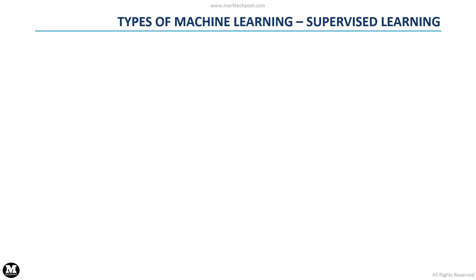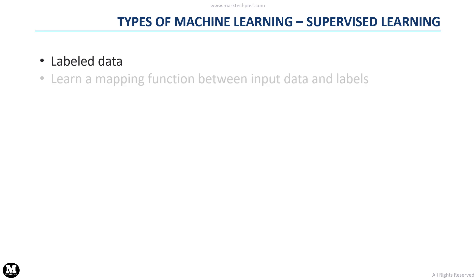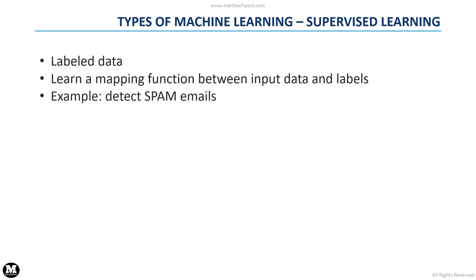Let's focus now on the different existing types of machine learning. When using a supervised learning method, the machine learning algorithm will use labelled data. In this way, the algorithm will learn a mapping function between the input data and the corresponding labels. The output of this algorithm is a machine learning model that can be deployed to predict the labels of new data it receives as input. An example is a model that learns how to detect if an email is spam or not spam, based on its content.